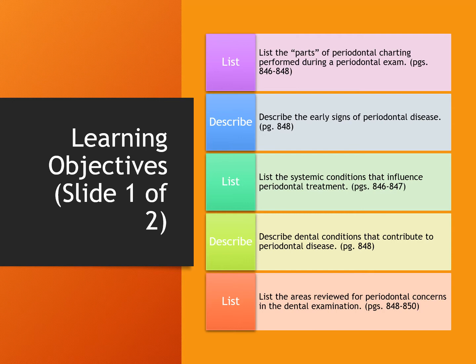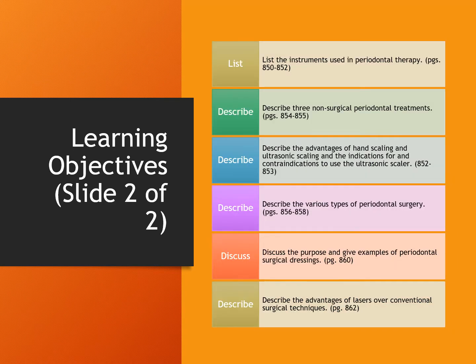We will also describe the early signs of periodontal disease and dental conditions that contribute to periodontal disease. We will look at instruments used in periodontal therapy, non-surgical treatments, the types of periodontal surgery, and periodontal surgical dressings. We will discuss hand scaling versus ultrasonic scaling, including the advantages of each and the indications and contraindications for the ultrasonic scaler. Finally, we will discuss lasers versus conventional surgical techniques.